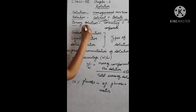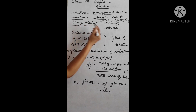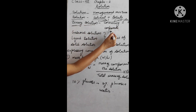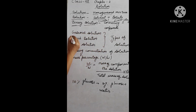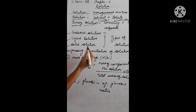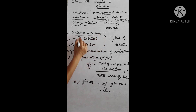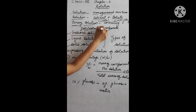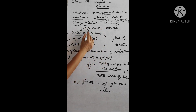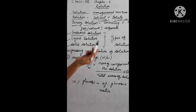Solutions are generally binary solutions — binary means they have two components. They can have solid-liquid, liquid-liquid, or gas-liquid combinations. According to physical state, solutions are divided into three parts: first are gaseous solutions, where gas is the solvent, and the solute may be gas, liquid, or solid.